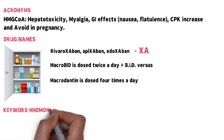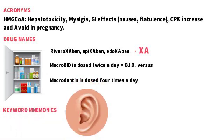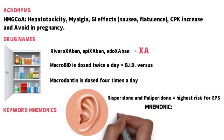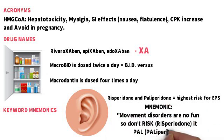Next, you can use keyword mnemonics. Use sound-alikes to help you associate the word to a new key term. For example, of the second generation antipsychotics, risperidone and paliperidone have the highest risk for extrapyramidal symptoms and tardive dyskinesia. The mnemonic you can use for this is movement disorders are no fun, so don't risk it, pal. So picking out keywords in each drug, risk sounds like risperidone and pal sounds like paliperidone.